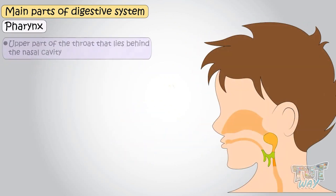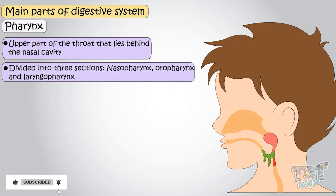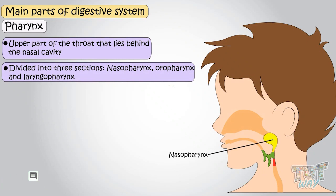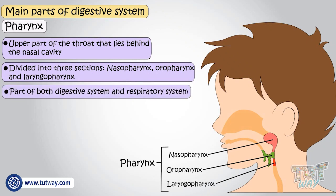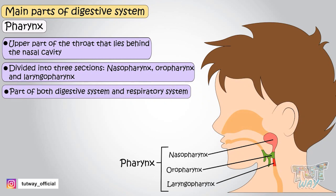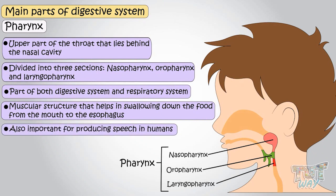Pharynx — the pharynx is the upper part of the throat that lies behind the nasal cavity. It is divided into three parts called nasal pharynx, oral pharynx, and laryngopharynx. The pharynx is part of the digestive as well as respiratory system. It is a muscular structure that helps in swallowing food from the mouth to the esophagus. It is also important for producing speech in humans.